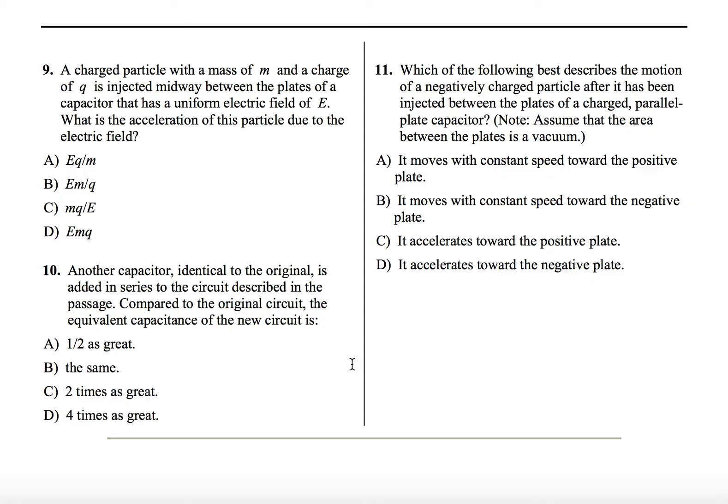Last one. Which of the following best describes the motion of a negatively charged particle after it has been injected between the plates of a charged parallel plate capacitor? Note, assume the area between the plates is a vacuum. So this is a really simple question. So all you have to know is how do charges interact with each other? And we know that like charges repel and opposite charges attract. So an electron that's negatively charged is going to be repelled by the negative lead. Whatever choices have it moving towards a negative plate would not make any sense. So that would be B and D would be out.